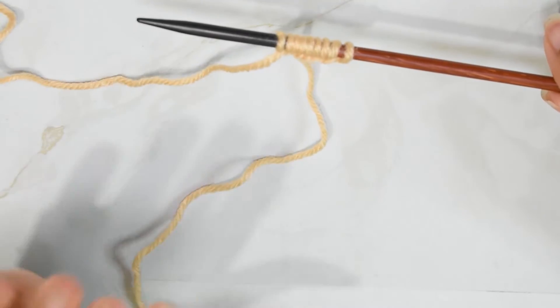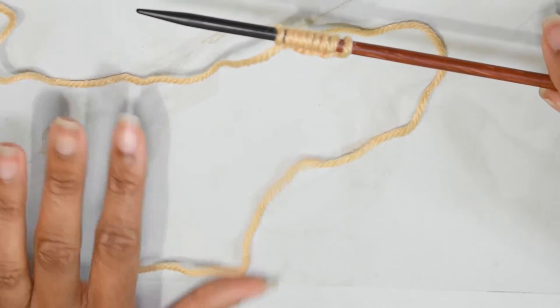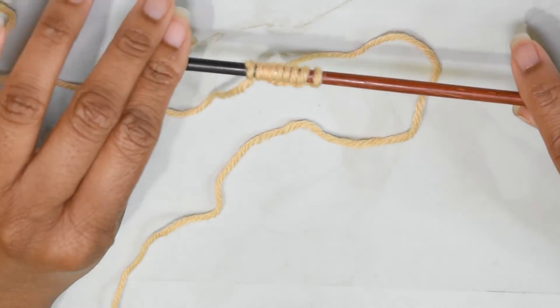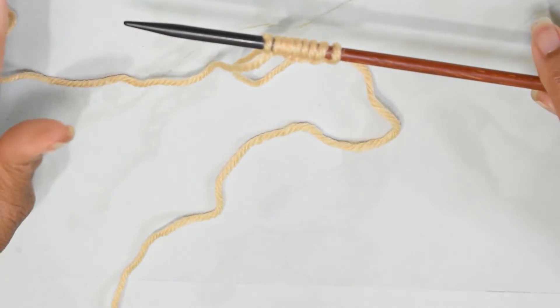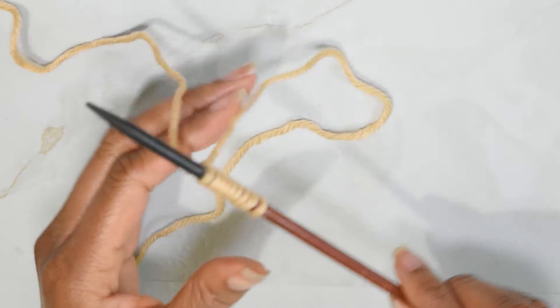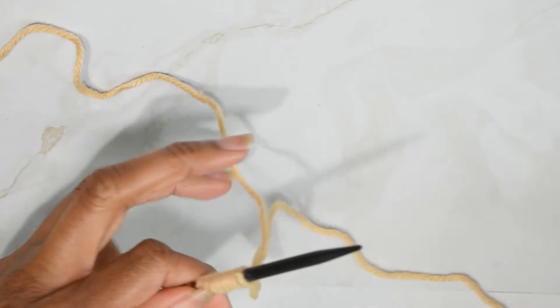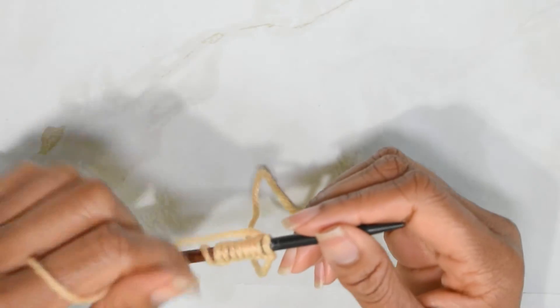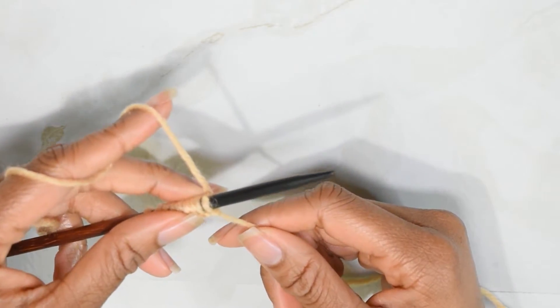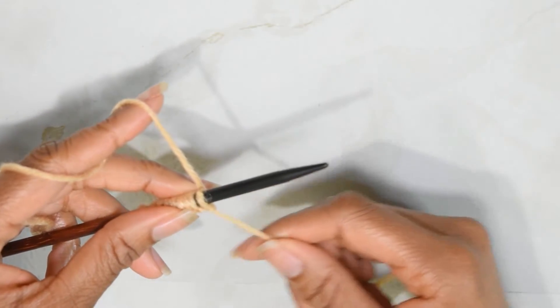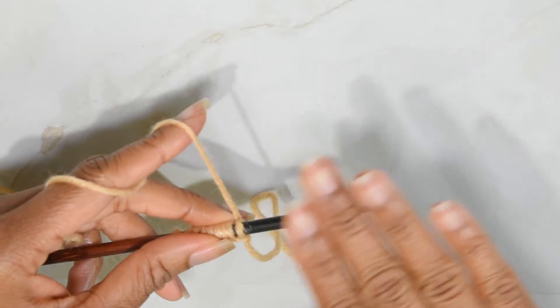All right, so when I cast on I take note that my tail, the tail of my yarn, is on my right hand needle but it's to the left of it. And if I were to turn my work, this is now my left hand needle, but the tail is on the right hand side of it.